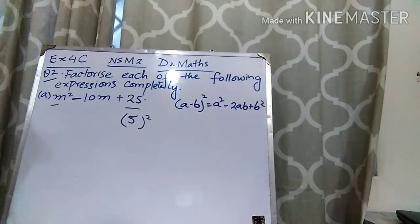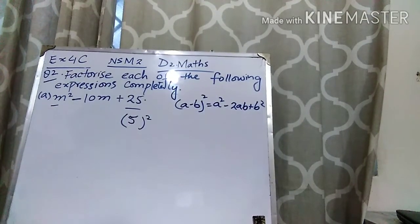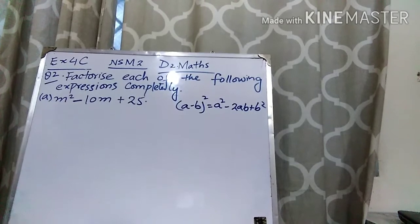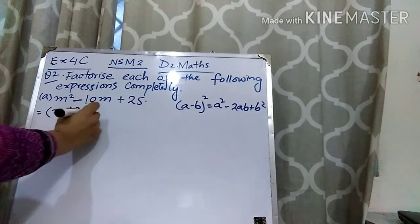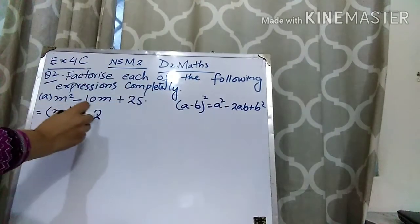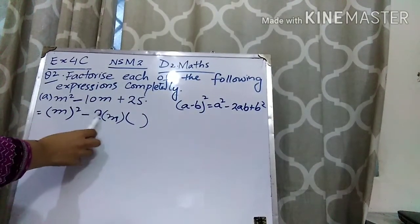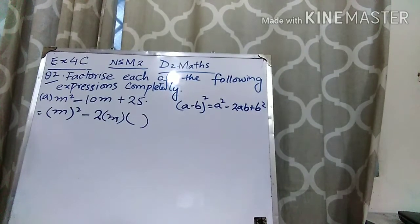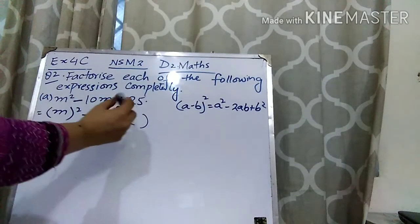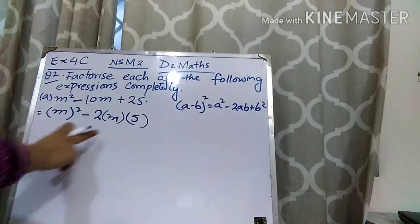Okay students, here you can see that the question is M squared minus 10M plus 25. We are going to apply the formula A squared minus 2AB plus B squared. Here A is M, so A squared is M squared. Now, what should B be so that we get 10M? When you multiply 2 with 5, you get 10, and when you multiply 10 with M, you get 10M. So A is M and B is 5.